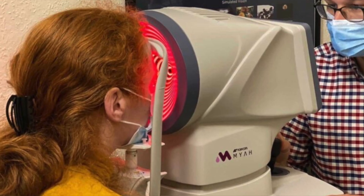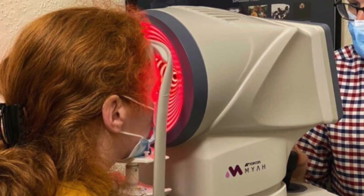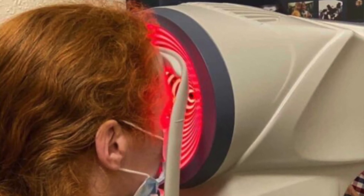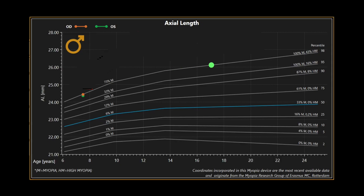First, you need to determine if they are at risk for their myopia going higher and becoming highly myopic. A number of things contribute to that risk, including genetics, how much near time, how much screen time, and how much time they spend outdoors. One of the most important tests, in my opinion, is to know their axial length. You should have your child's axial length — the length of their eyeball — measured every single visit and track that growth.